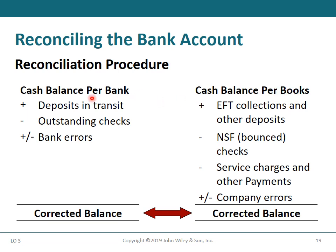When beginning from the bank balance, add deposits in transit (recorded in books but not in bank statement), deduct outstanding checks (recorded in books but not in bank statement), and add or deduct bank errors depending on the type of error, resulting in the corrected balance.